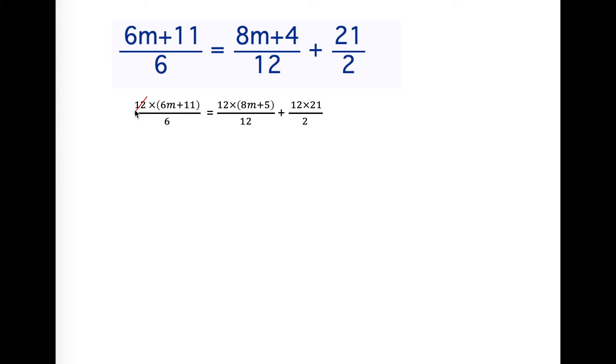6 goes into 12 twice. That cancels and we have a 2. So the 2 is going to multiply the 6m+11. 12 goes into 12 totally. It totally cancels and 2 goes into 12 six times.